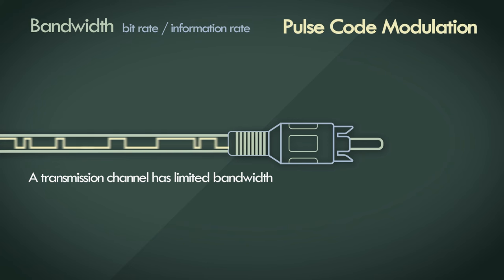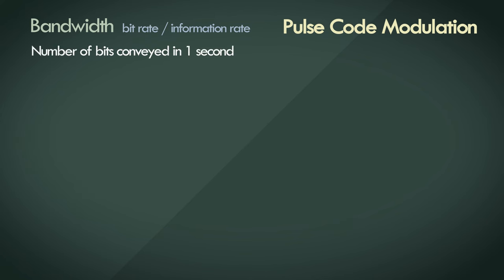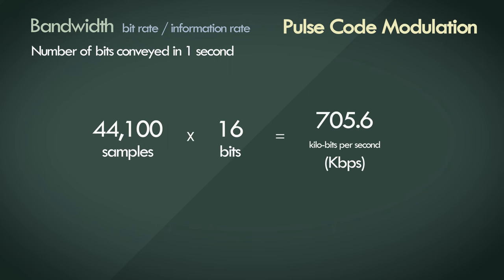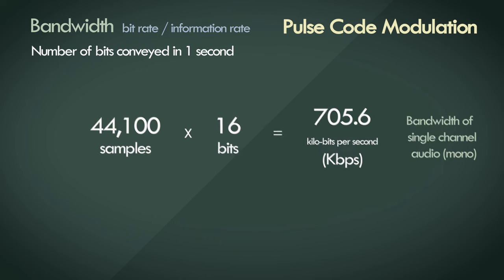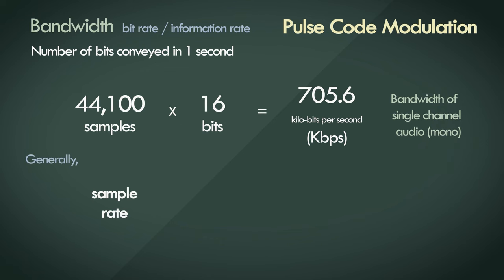Bitrate is essentially calculated by how many bits are conveyed in one second of time. In our particular example, there are 44,100 samples in one second, and the resolution of each sample is 16 bits. So simple math, 44,100 times 16, which is 705,600 bits per second, or 705.6 kilobits per second, for a single channel of audio. So the general formula is just sample rate times the bit depth times the number of channels.